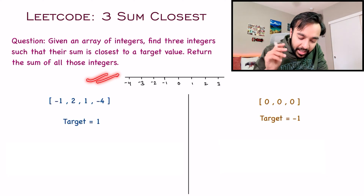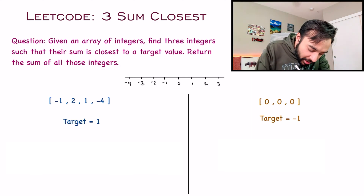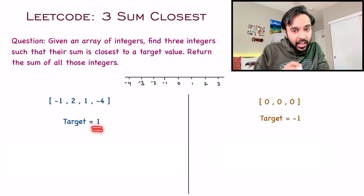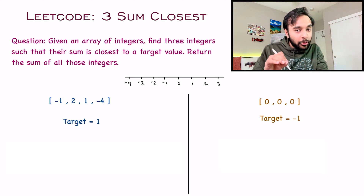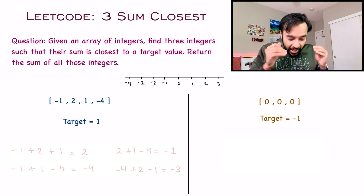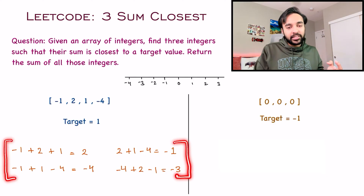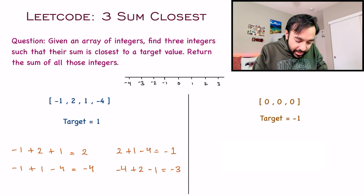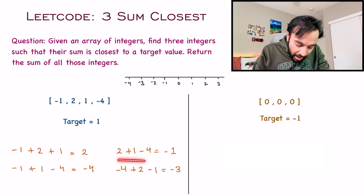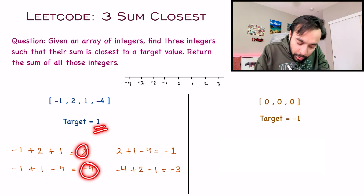I have a number line here that will help visualize things even better. In my first test case, I have an array that has four integers and my target value is one. Since you have to pick three integers, you can pick them in a lot of different ways. In this particular problem, you can pick these three integers in four ways, and when you sum them, these are the respective sums that you will get. As per the problem statement, you have to find those three integers whose sum is closest to this target value.